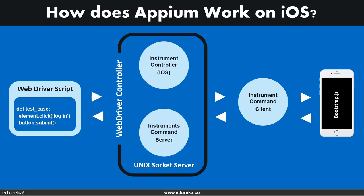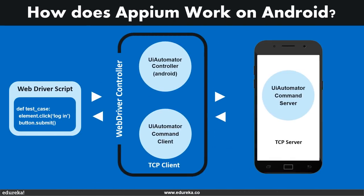In the iOS architecture diagram, the command lifecycle goes like this: Selenium WebDriver picks up a command from the code like element.click and sends it as a JSON representation via an HTTP request to the Appium server. The Appium server knows the automation context and sends the command to the instrument command server, which waits for the instrument command client written in Node.js to pick it up and execute it in bootstrap.js within the iOS instrumentation environment. Once executed, the command client sends back the message to the Appium server, which logs everything. The cycle continues until all commands are executed.